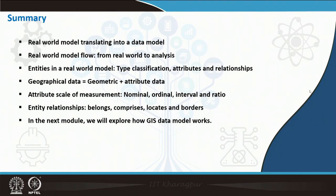To summarize: we have looked at real world model translating into a data model. In the real world model you have type classification, attributes, and relationships. Geographical data always has geometric data plus attribute data. In a spatial context, entity is connected with geometric value plus attribute data. Attribute scale of measurement includes nominal, ordinal, interval, and ratio scales, and accuracy of data depends on the scale. Entity relationships — for example connecting a particular attribute to the entity — use terms like 'belongs to', 'comprises of', 'locates'. In the next class we will explore different data models and look at each of these data models in a more holistic way. Thank you very much, let us meet in the next class.